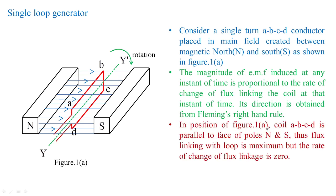In position Figure 1A, coil ABCD is parallel to the faces of the poles — north and south. Thus the flux linking with the loop is maximum, but the rate of change of flux linkage is zero. The coils are not cutting the flux lines at this position; they will begin to cut the flux lines once rotation starts.